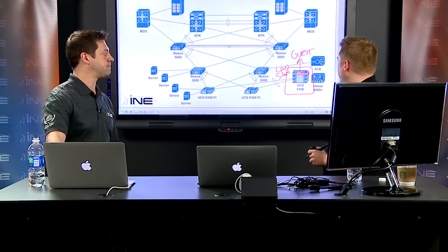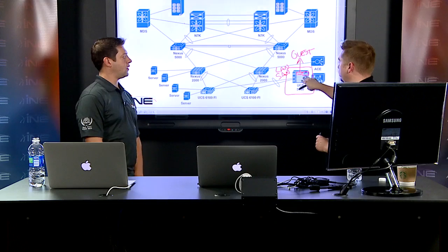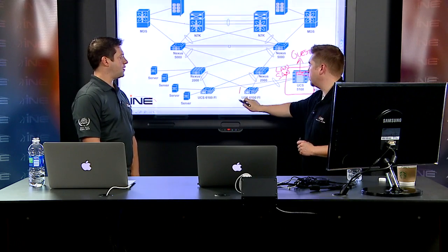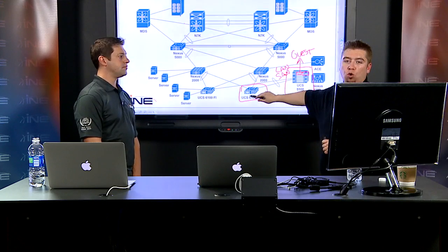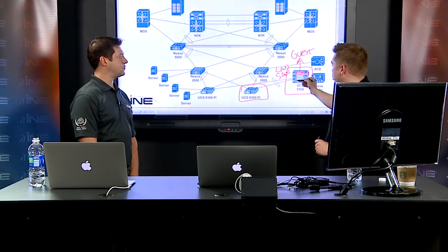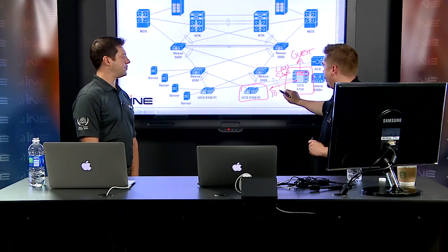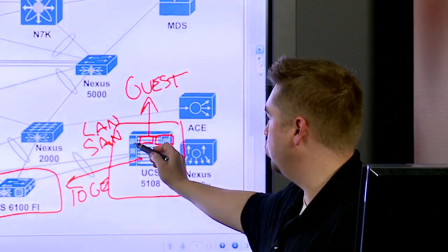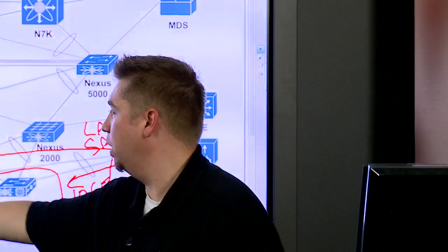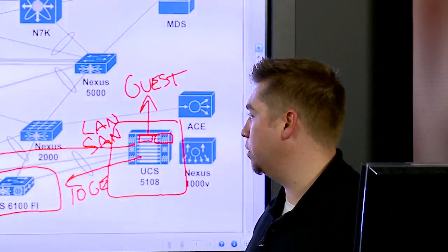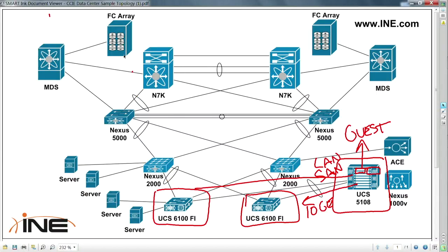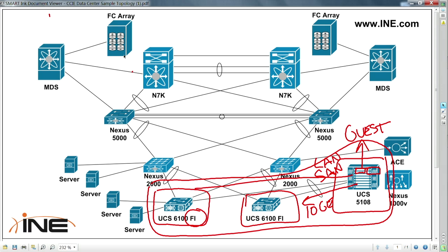In addition to the physical design of the chassis, we also have what are known as UCS Fabric Interconnects. This is where the physical wiring is split out. From the UCS chassis, we have uplinks — 10 GigE ports — going to multiple fabric interconnects for redundancy, so if one goes down or a link is cut, our servers aren't cut off from the rest of the network.